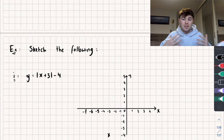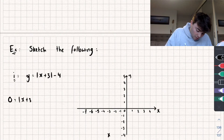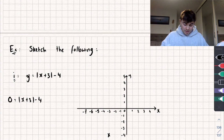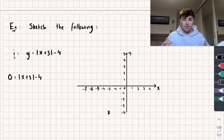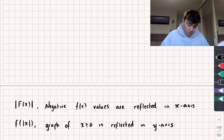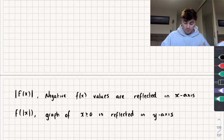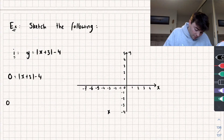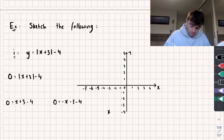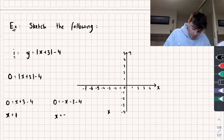It's also useful to find where the graph passes through the x-axis, when y equals 0. We solve 0 equals the modulus of x plus 3 subtract 4. There will be two solutions: one where we ignore the modulus — giving 0 equals x plus 3 subtract 4, so x equals positive 1 — and another where we multiply the contents by negative 1 — giving 0 equals negative x subtract 3 subtract 4, so x equals negative 7.